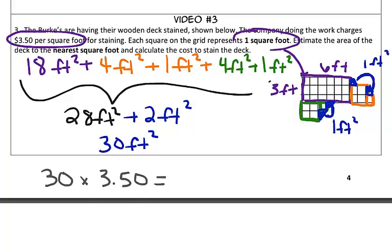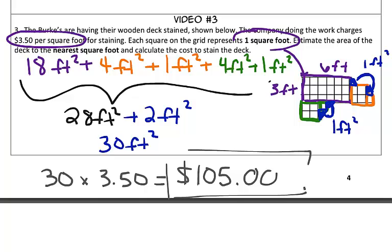When I multiply 30 by $3.50, I get $105. Ta-da! So it is going to be approximately $105, hopefully you've been saving up, to stain this deck, that is approximately 30 square feet. Nice work!